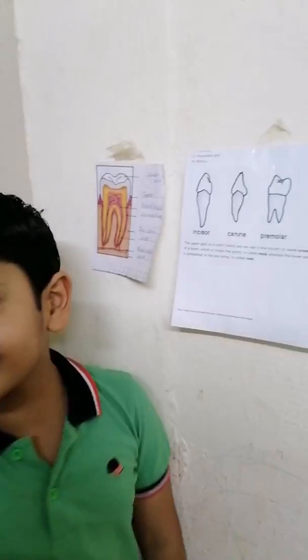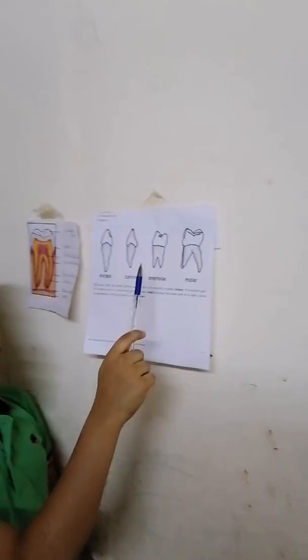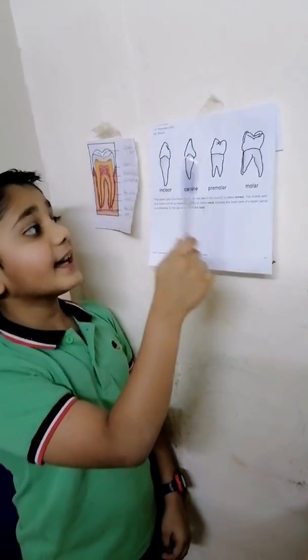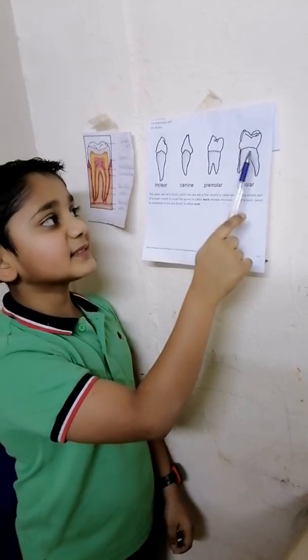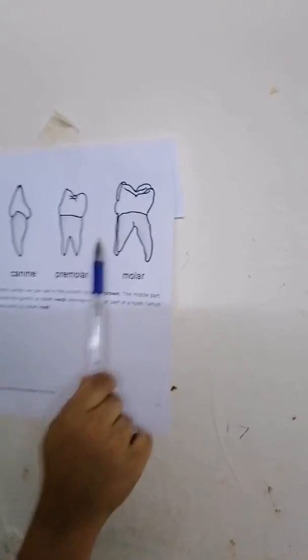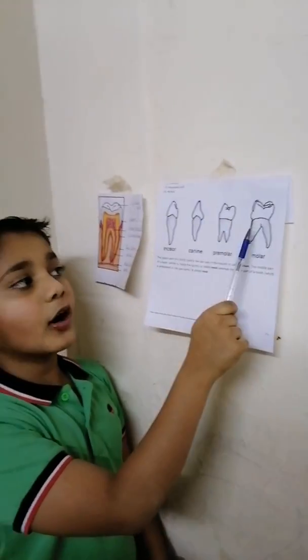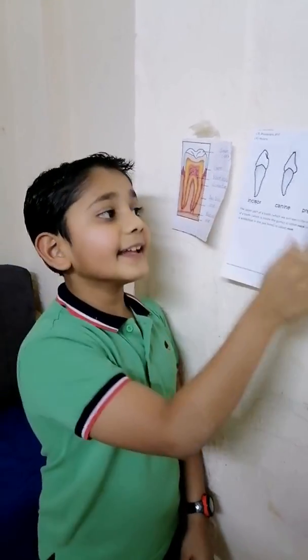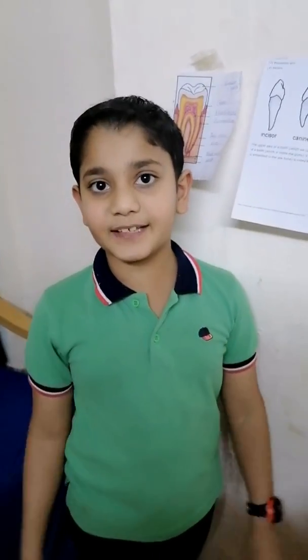And the last type is molar. Molars are broad and flat like premolars, but molars are just bigger than premolars. Molar is also known as grinding teeth. There are six molars in our upper jaw and lower jaw. Now you know the four types of teeth.